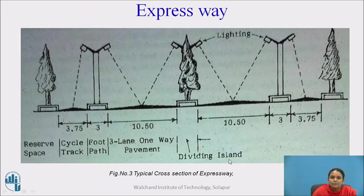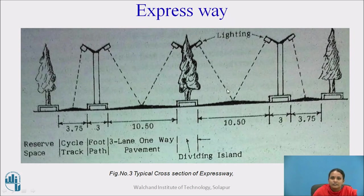Here is the typical cross section of the expressway. It includes cycle tracks, footpaths, and three-lane one-way pavement, along with lighting provisions. The lane width is 10.5 meters for three-lane one-way width.